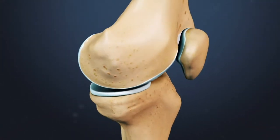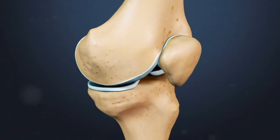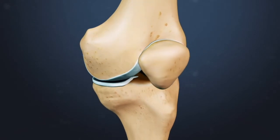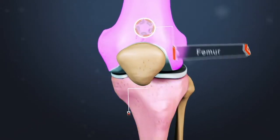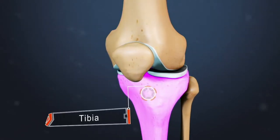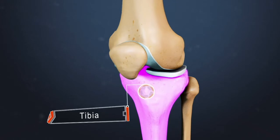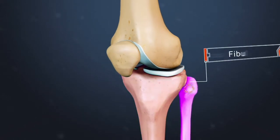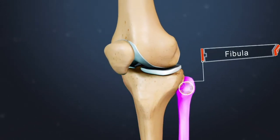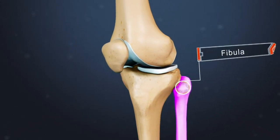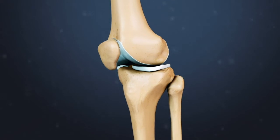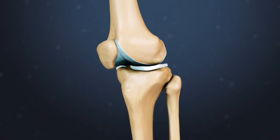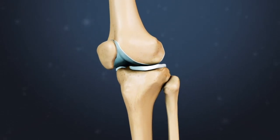The knee is the largest joint in the body. It is the point where the femur, or thigh bone, meets the tibia, or shin bone. The fibula is a smaller bone that runs beside the tibia. The joint also includes the patella, commonly known as the kneecap.